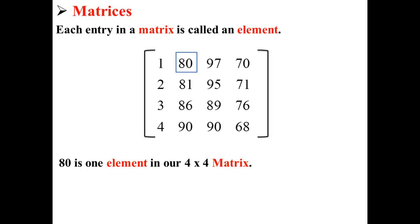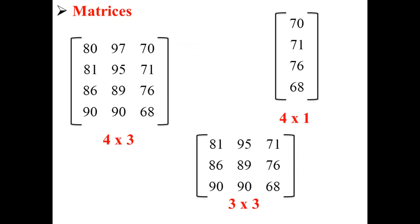Here we have three different examples of more matrices: we have a four by three matrix, a four by one matrix, and a three by three matrix.